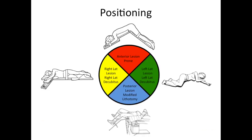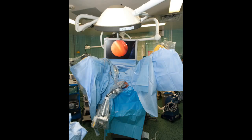The lesion must always be positioned at 6 o'clock due to the narrow working space in the rectum. Lesions of the lateral or anterior aspect of the rectum require lateral decubitus or prone positioning respectively. This patient's lesion is posterior, therefore the patient is in lithotomy position.